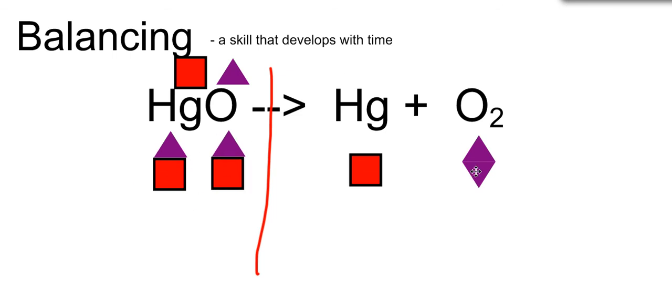So now I have two triangles on this side, and two triangles over here. But now my squares are out of proportion with one another. So I need to draw another square on this side.